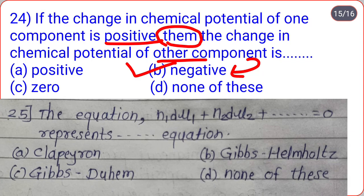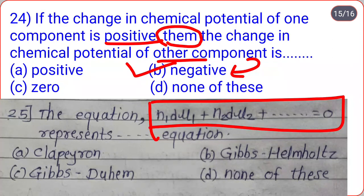The last question: the equation N₁dμ₁ + N₂dμ₂ + ... = 0 represents which equation? Options are Clapeyron, Gibbs-Helmholtz, Gibbs-Duhem, or none of these. This equation represents the Gibbs-Duhem equation — that is option C.